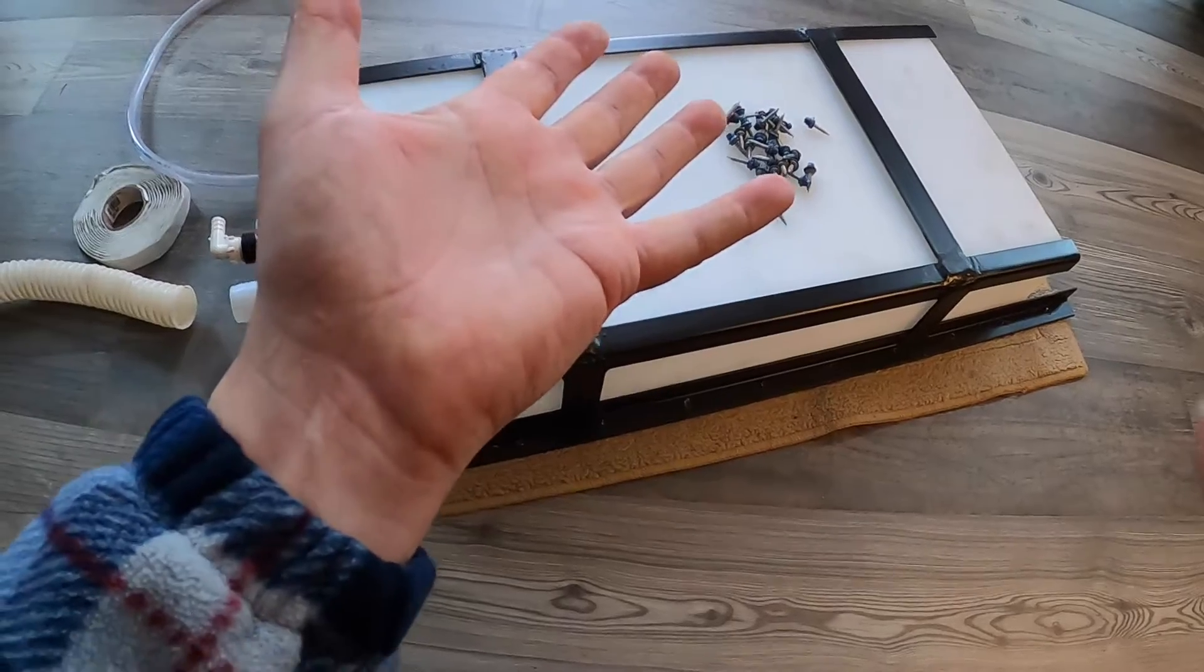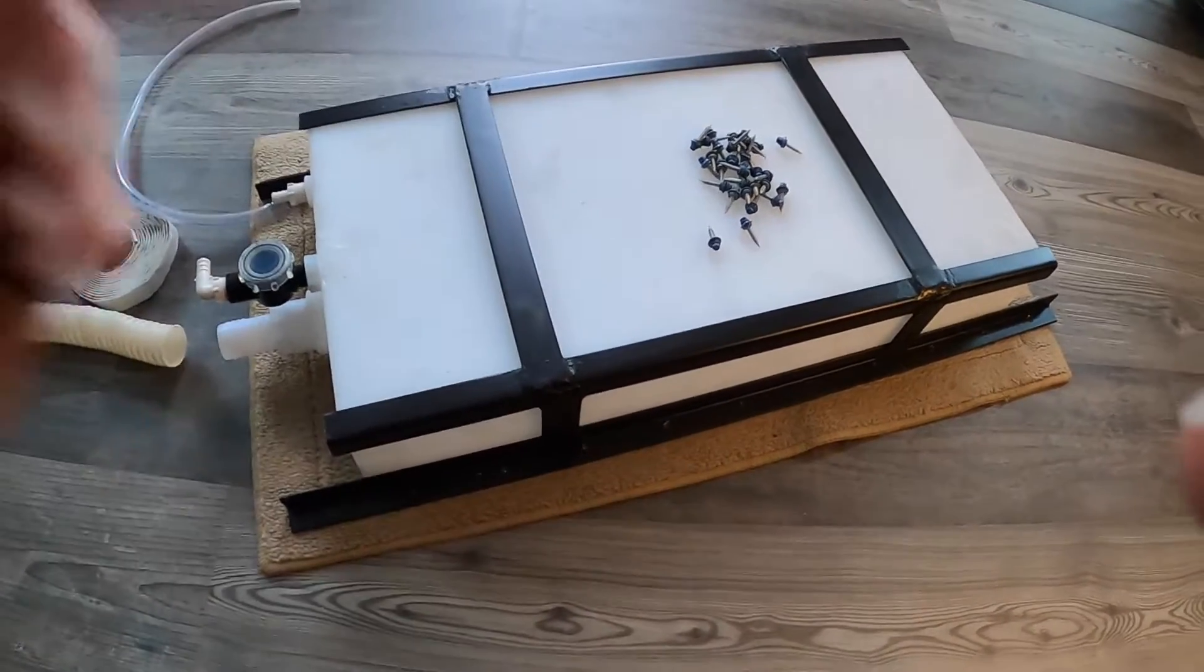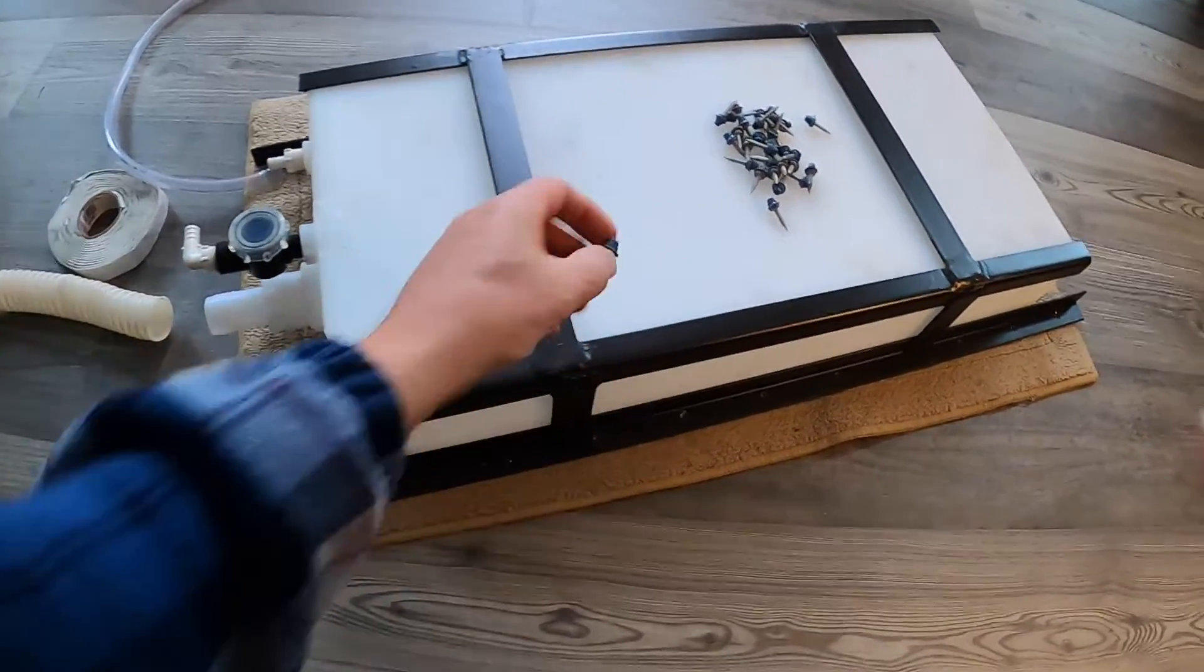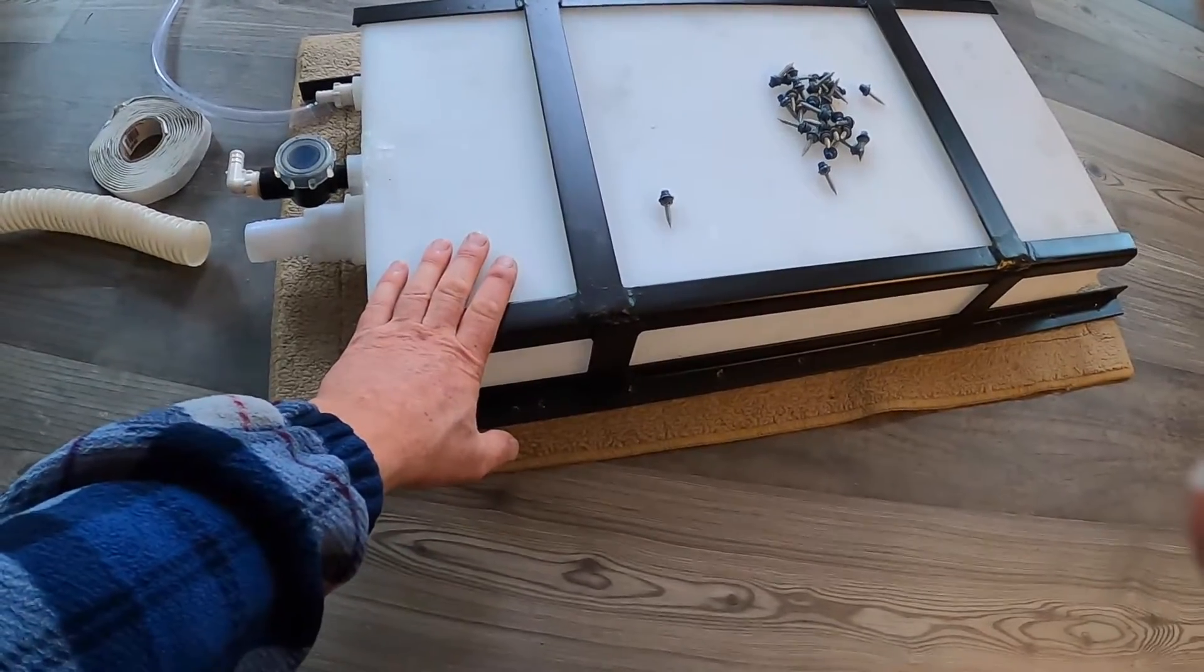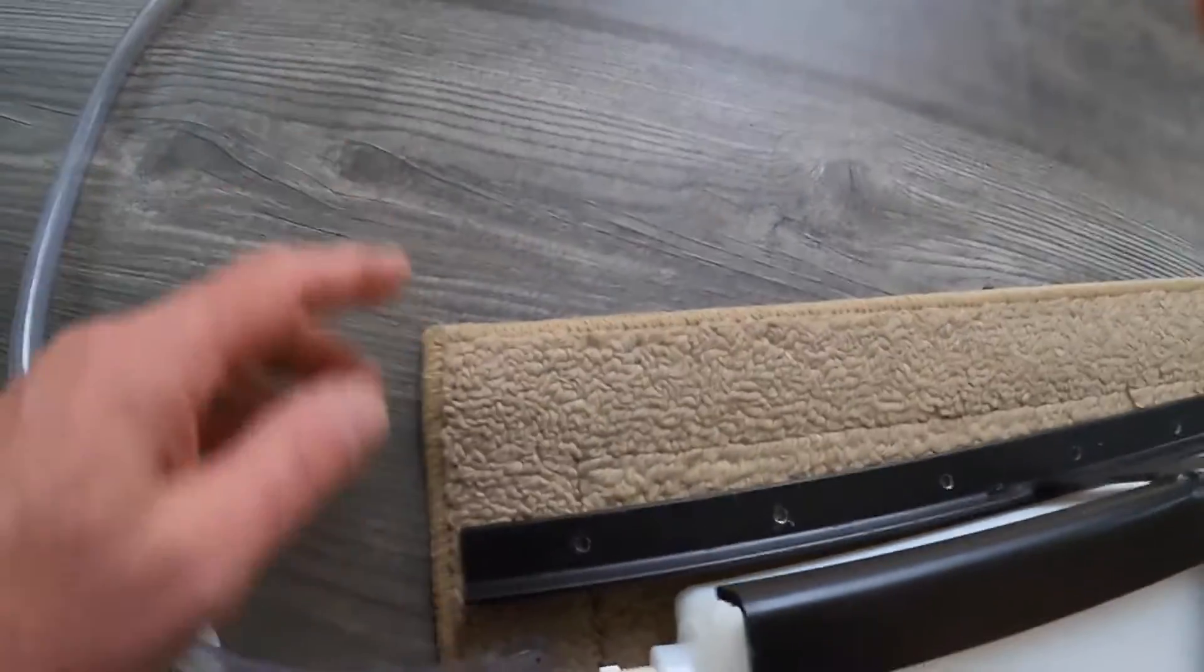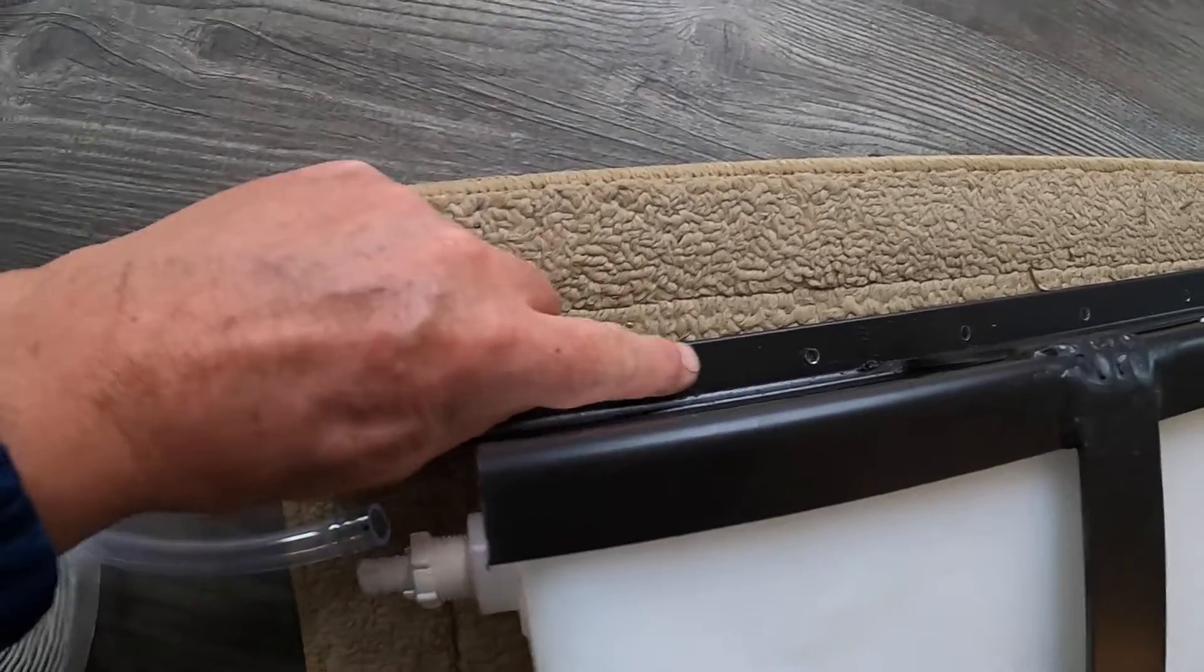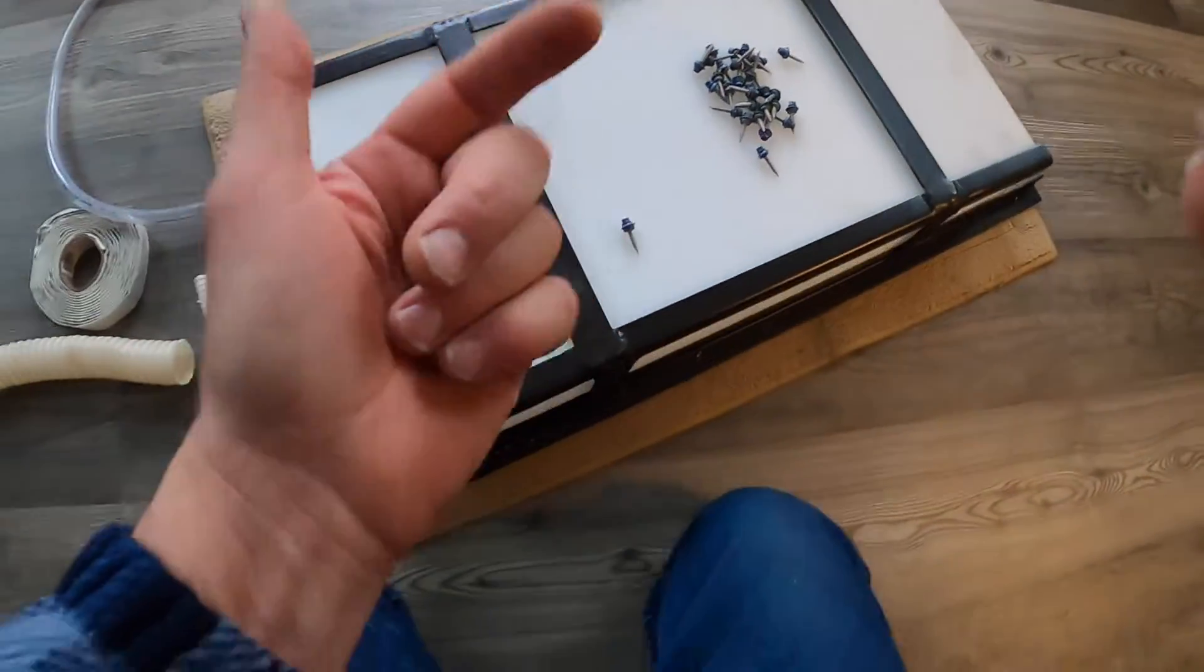The screws that you use are important. Number one, there has to be a lot of them. This is going to weigh about 50 pounds when it's full. You can see them here. I drilled 22 holes along the perimeter of this.